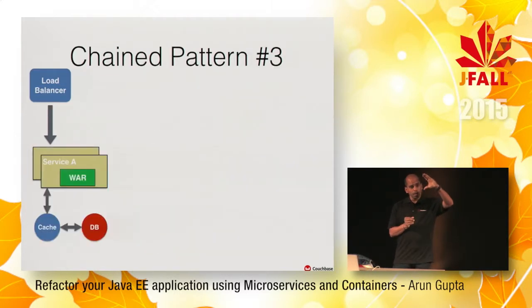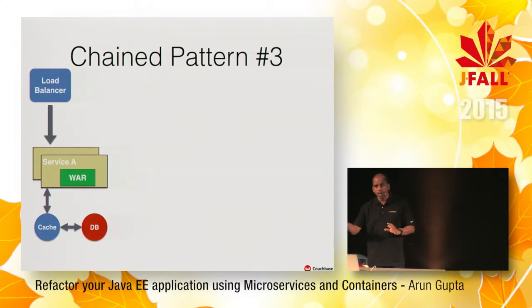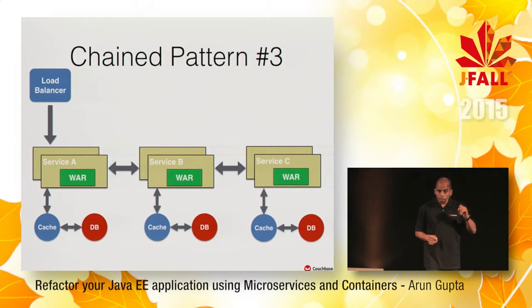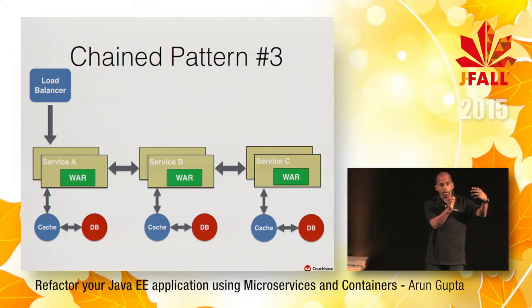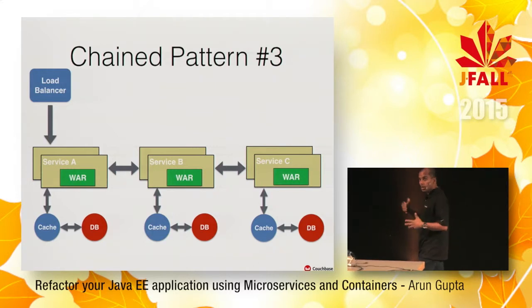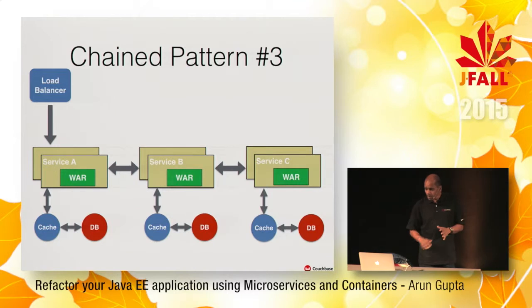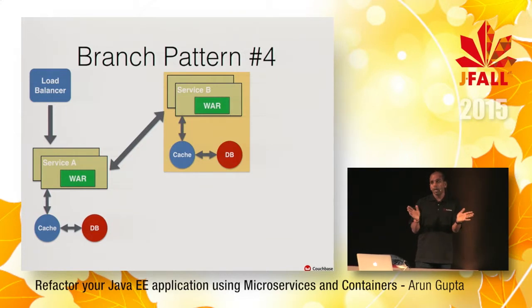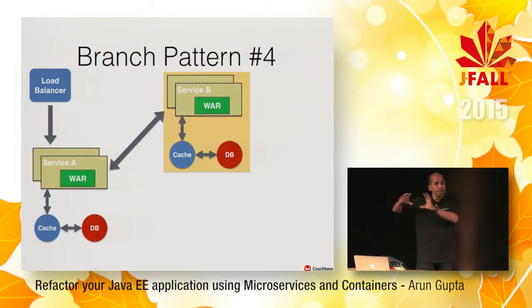The chain pattern: you receive a request to service A, which calls service B, which then calls service C. These three services are called one after the other. The important part is that the client is still synchronous — the client is waiting until the full chain A-to-B-to-C and back has returned. So don't make your chain too long, otherwise the client would be waiting practically forever. Keep your chain size small.